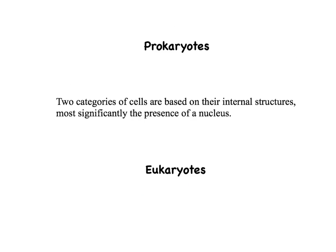Scientists divided cells into two categories based on their internal structure — the things inside of them. The one determining factor that made scientists decide which category a cell belongs to is if it has a nucleus. The presence of a nucleus decides what category a cell is grouped into. One category is called eukaryotes, and the second is called prokaryotes. We'll be talking about how these are different and how they're similar.